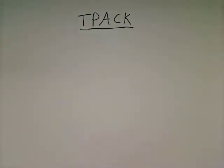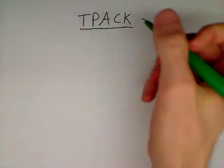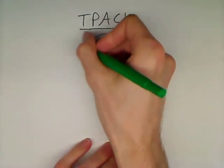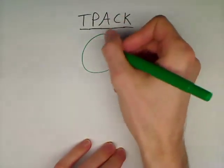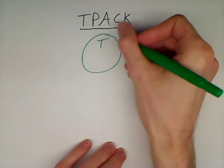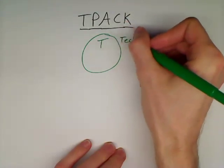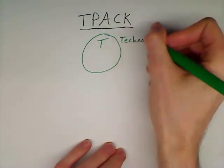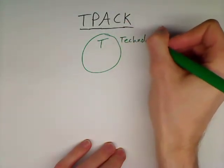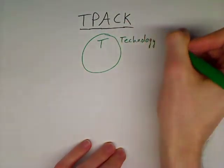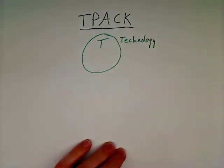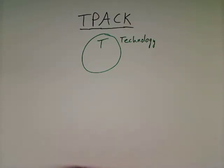To understand what this is, we first need to draw a few circles. Let's start with a green circle and call this technology. Technology represents technical knowledge — the ability to use software, the ability to use a computer, and so forth.